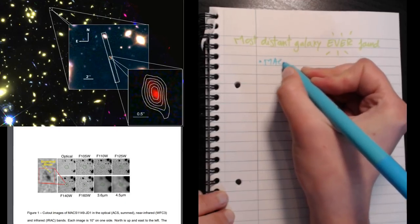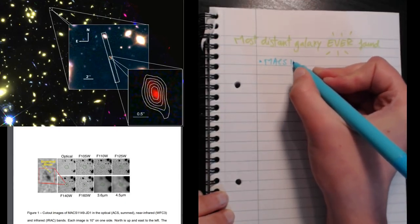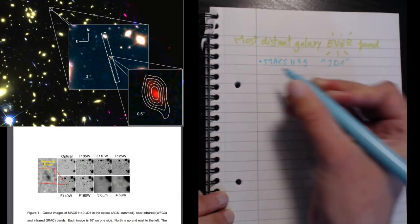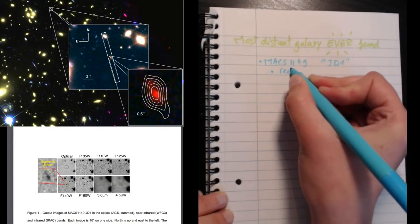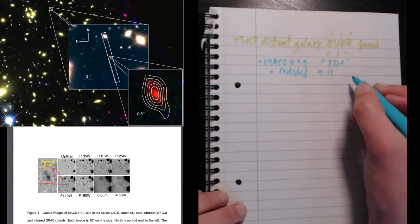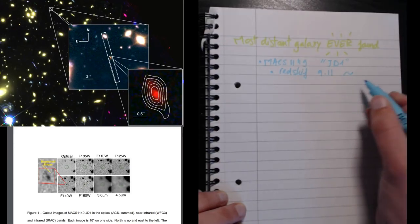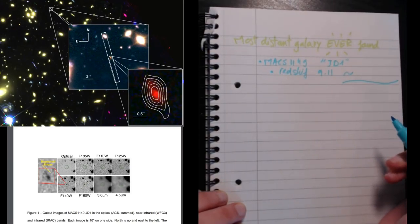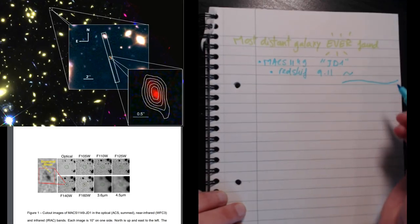So its full name is Max 1149, nicknamed JD1. This galaxy is at a redshift of 9.11. That means that the light that came from this galaxy when it was emitted, by the time it reached us, has been stretched to more than 10 times its original length. It has lost more than 10 times the energy it started with.